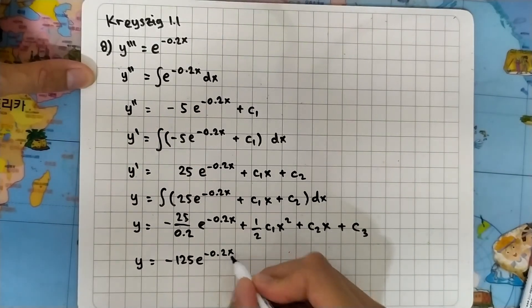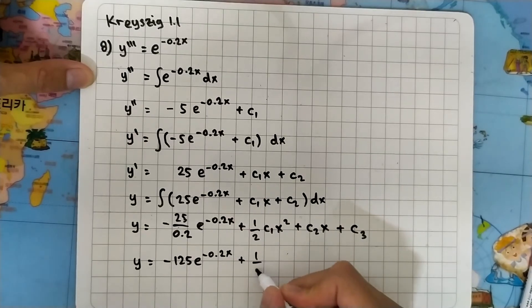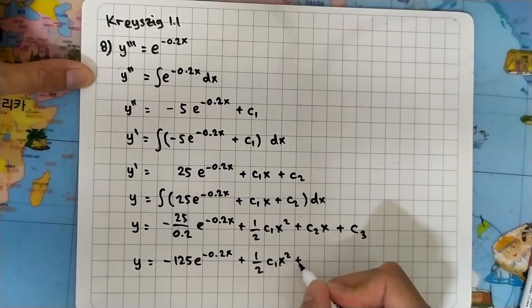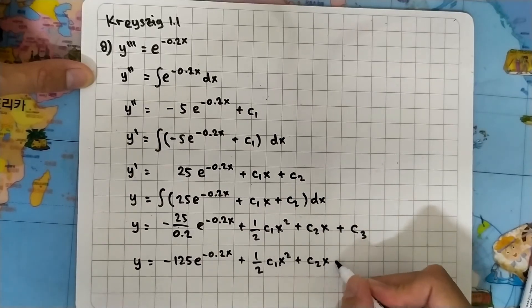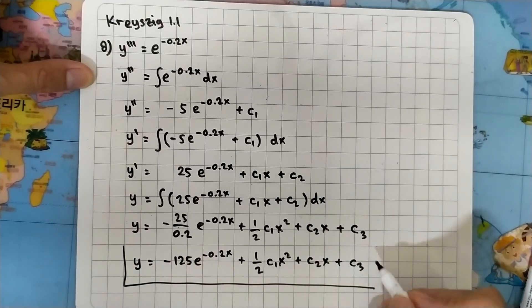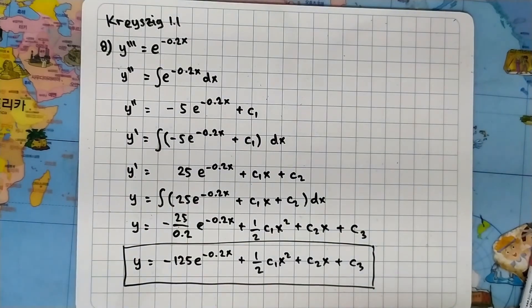Plus one-half c1 x squared plus c2 x plus c3. So this is the answer for question number eight, quite simple and easy. Thank you for watching.